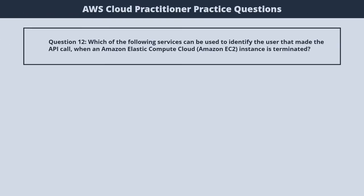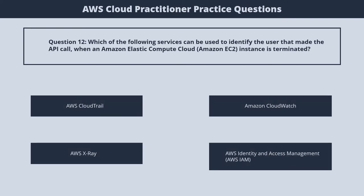Question 12. Which of the following services can be used to identify the user that made the API call when an Amazon EC2 instance is terminated? 1. AWS CloudTrail. 2. Amazon CloudWatch. 3. AWS X-Ray. 4. AWS Identity and Access Management. The correct answer is 1. AWS CloudTrail.